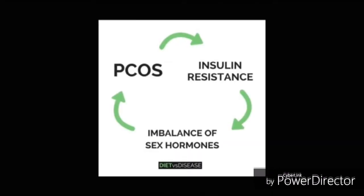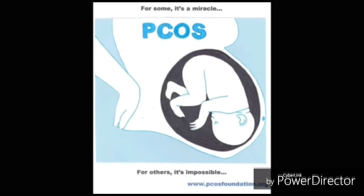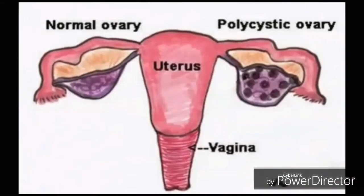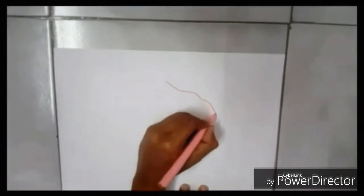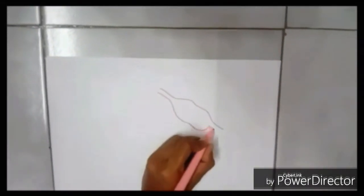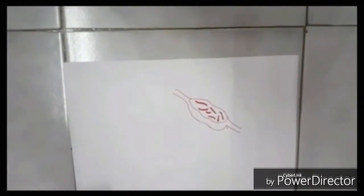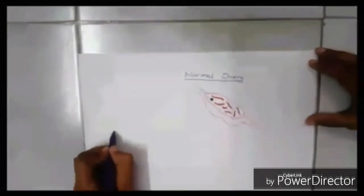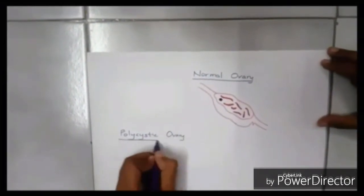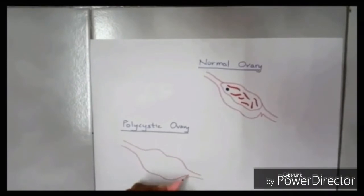PCOS — Polycystic Ovarian Syndrome — is a condition in which a woman's level of sex hormones, estrogen and progesterone, are out of balance. This leads to growth of ovarian cysts. PCOS can affect a woman's menstrual cycle, fertility, cardiac function, and appearance. Symptoms include excess hair on the face, chest, stomach, thumbs, or toes; decrease in breast size; deeper voice; and hair loss. Other symptoms may include acne, weight gain, pelvic pain, depression, and infertility.